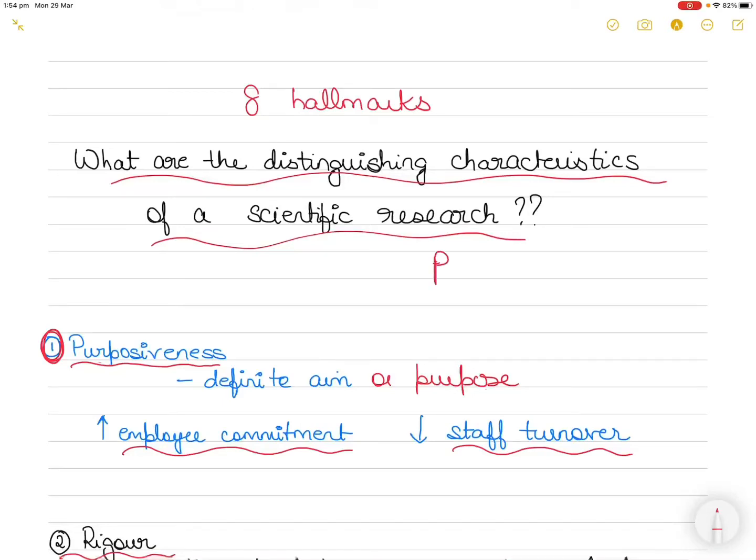Hi everyone, welcome to part two of the two-part series discussing the distinguishing characteristics or eight hallmarks of scientific research. In part one, the link of which you can find in the description below, I discussed the first four characteristics.